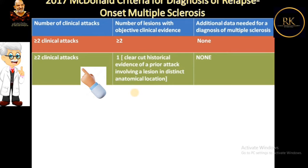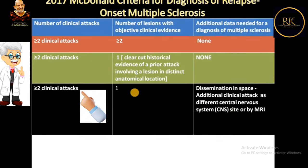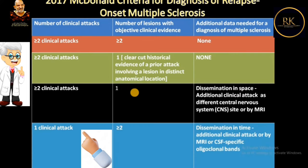If the patient has greater than two clinical attacks with one lesion showing clear historical evidence of prior attacks involving a lesion of a distinct anatomical location, we also do not need additional data. If the patient has greater than two clinical attacks but only one lesion showing objective clinical evidence, then we need dissemination in space as additional data. Or if the patient has one clinical attack with two lesions showing objective clinical evidence, then we need dissemination in time — demonstrated by MRI or CSF-specific oligoclonal bands — as additional data to confirm the diagnosis.